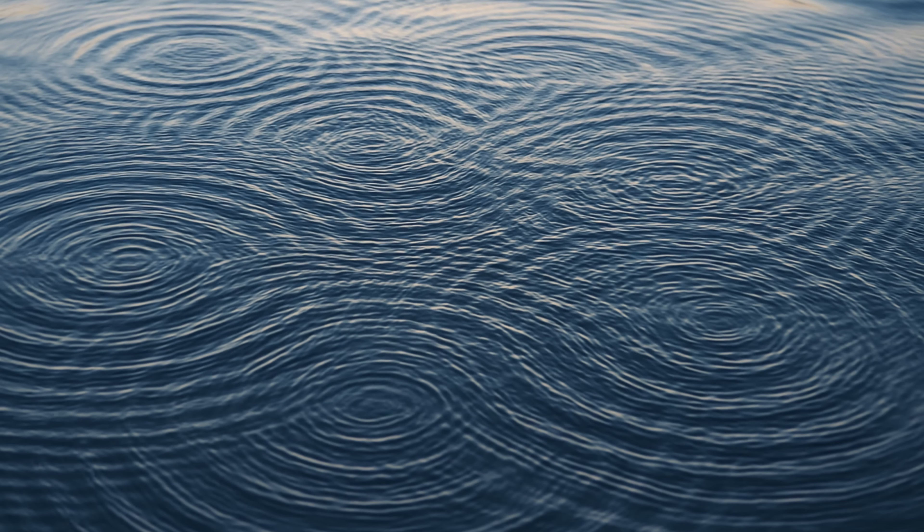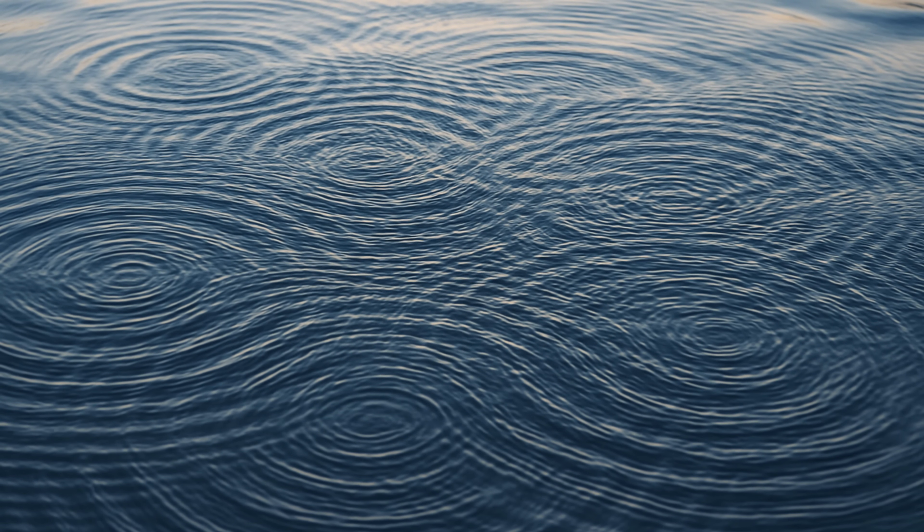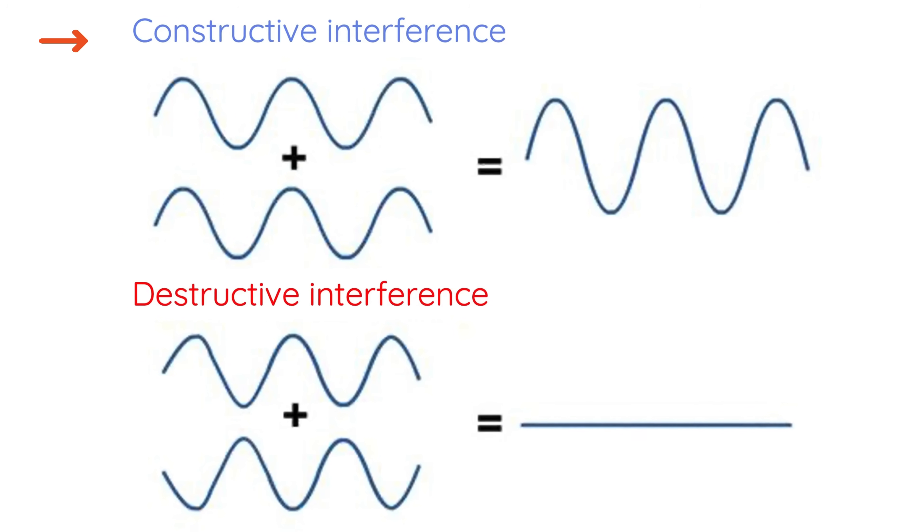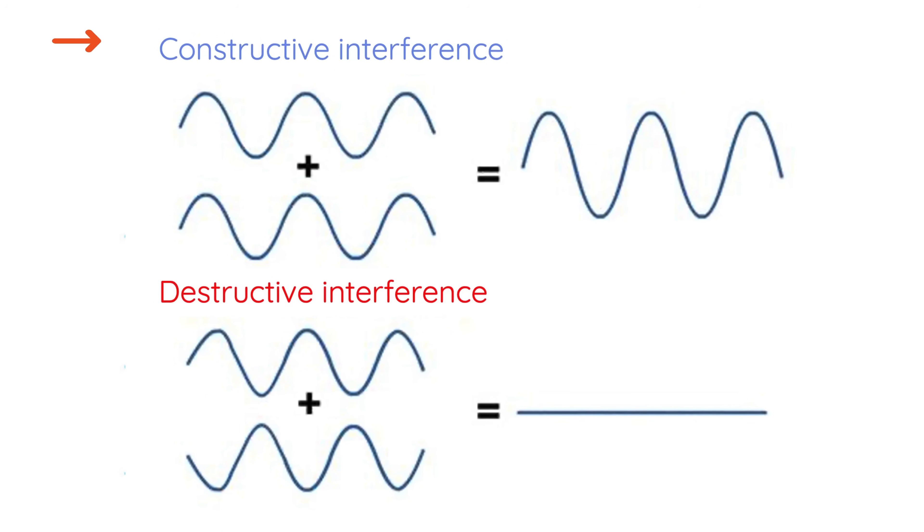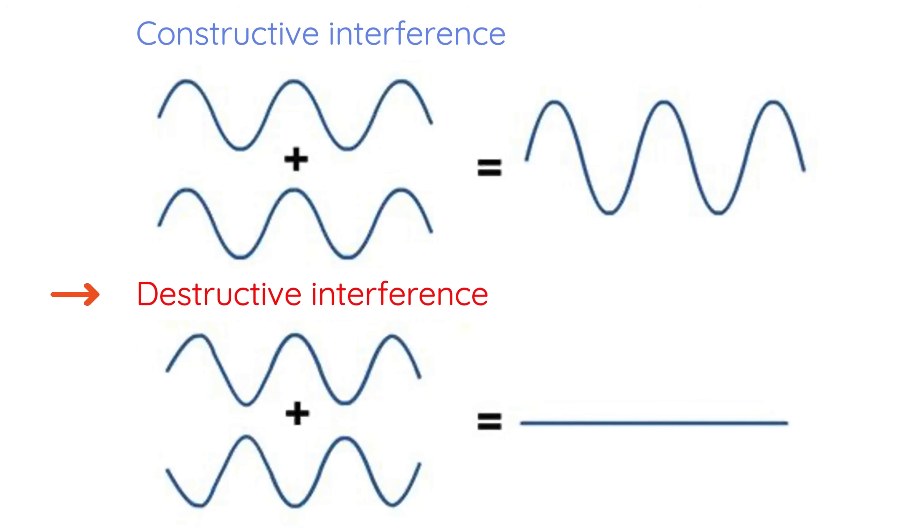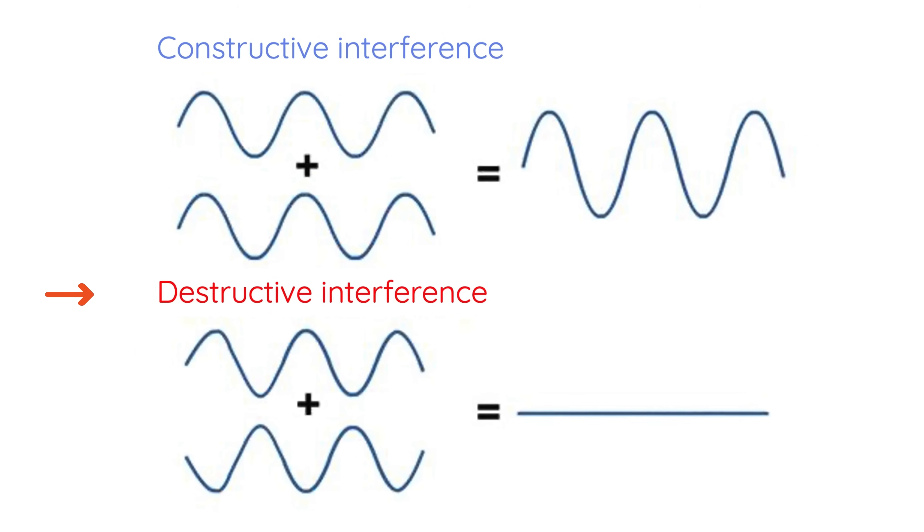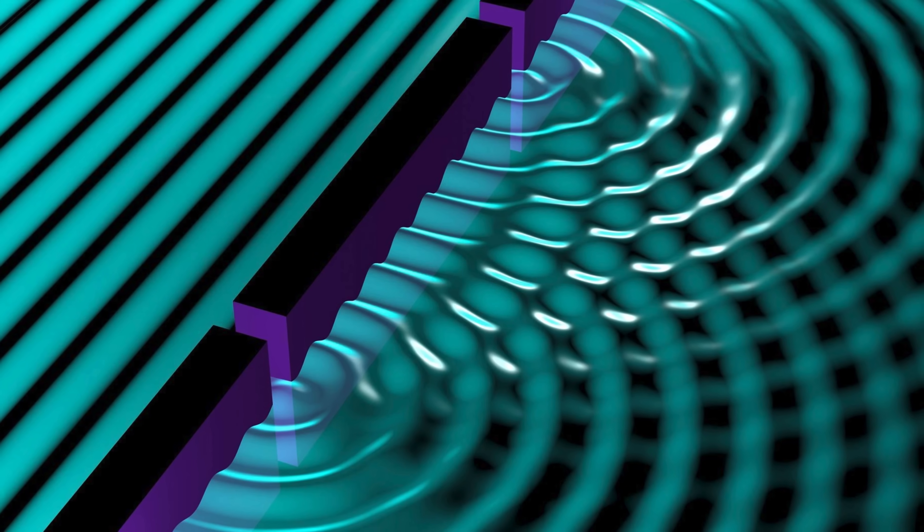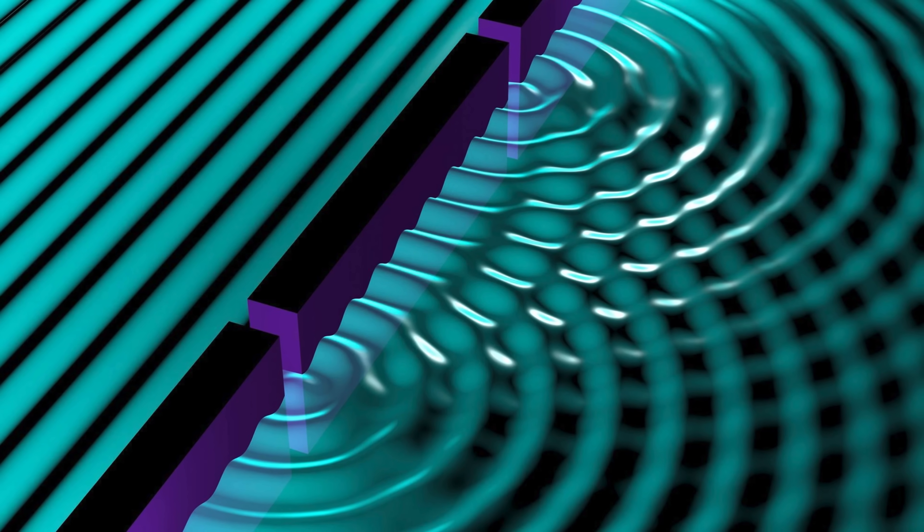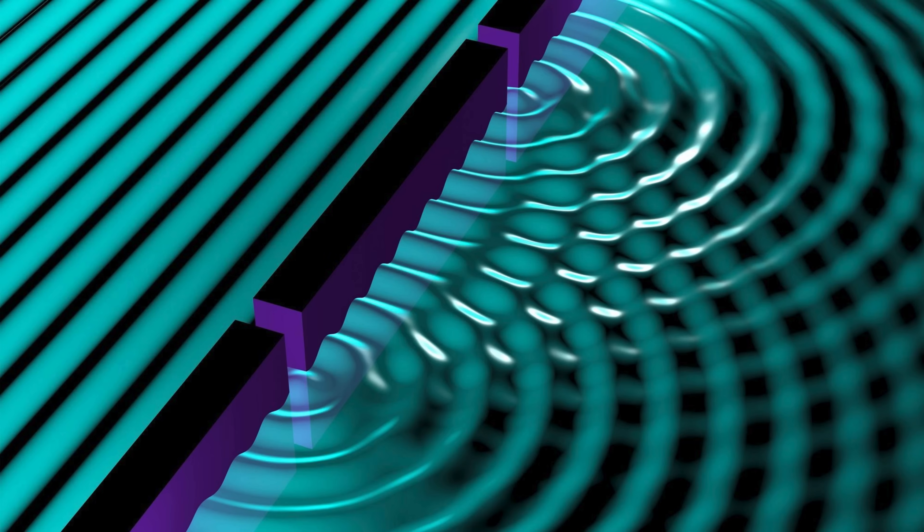Waves also exhibit a fascinating property called interference. When two waves meet, their peaks and troughs can either amplify each other, forming constructive interference, or cancel each other out, leading to destructive interference. This behavior is key to understanding the double-slit experiment, where light and even particles like electrons behave in ways that defy classical intuition.